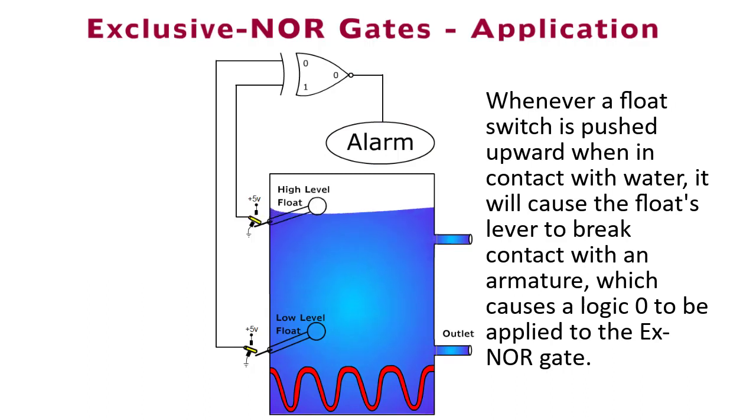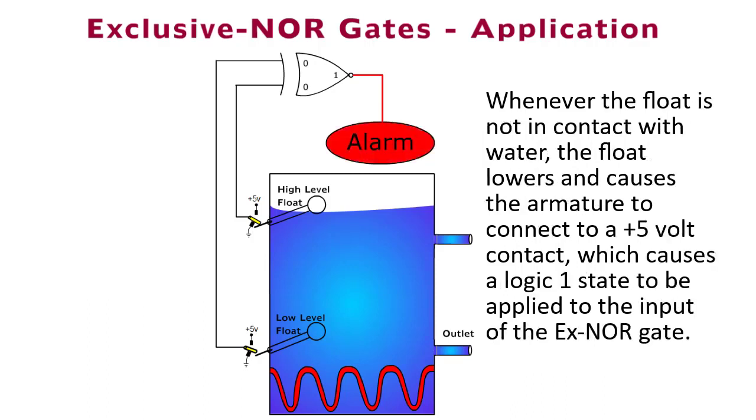Whenever a float switch is pushed upward when in contact with water, it will cause the float's lever to break contact with an armature, which causes a logic 0 to be applied to the X-NOR gate. Whenever the float is not in contact with water, the float lowers and causes the armature to connect to a positive 5-volt contact, which causes a logic 1 state to be applied to the input of the X-NOR gate.